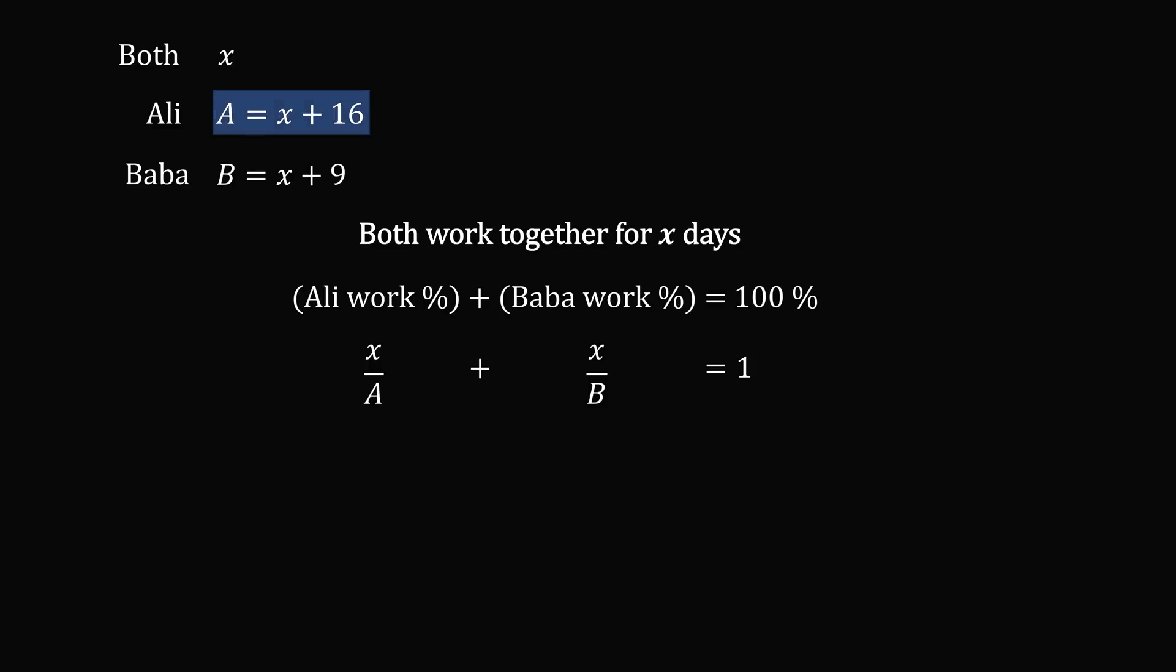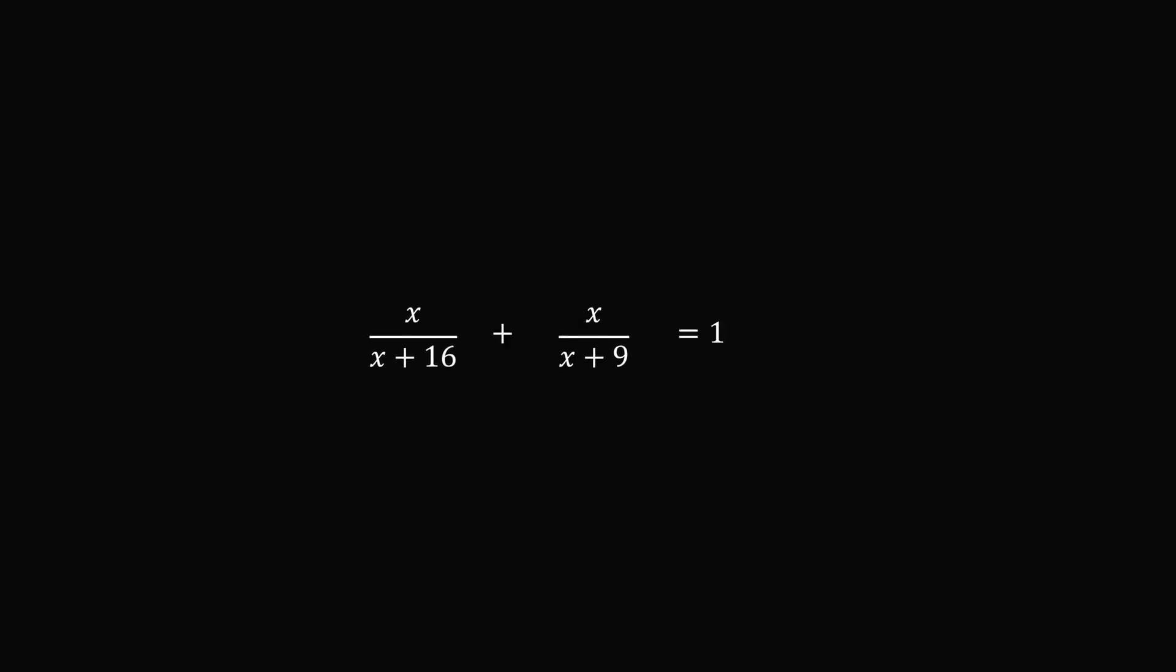But we know that a is equal to x plus 16, and b is equal to x plus nine. So we could substitute these in. So we have x over x plus 16, plus x over x plus nine is equal to one. So we have a single equation in one variable. Let's just focus on solving this.